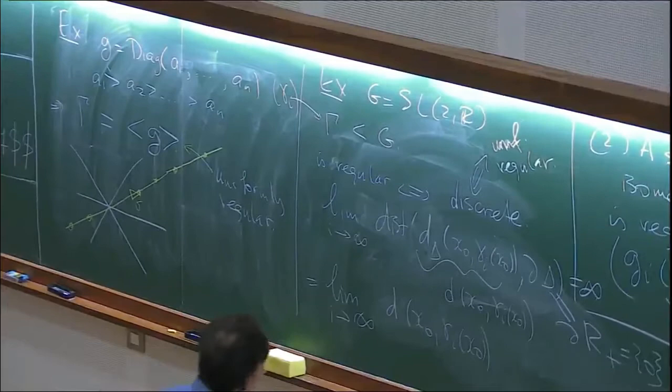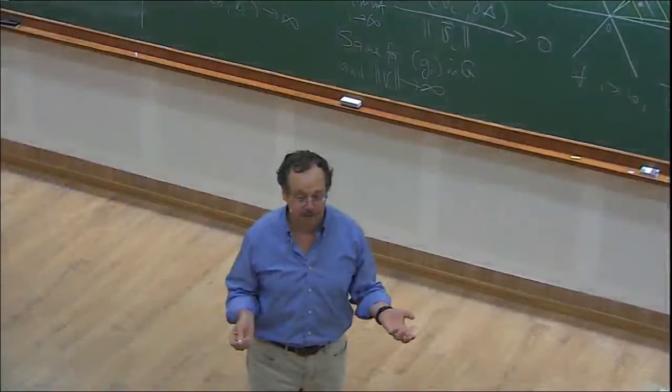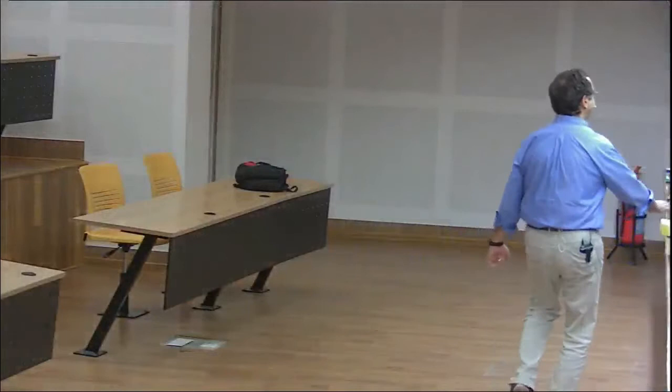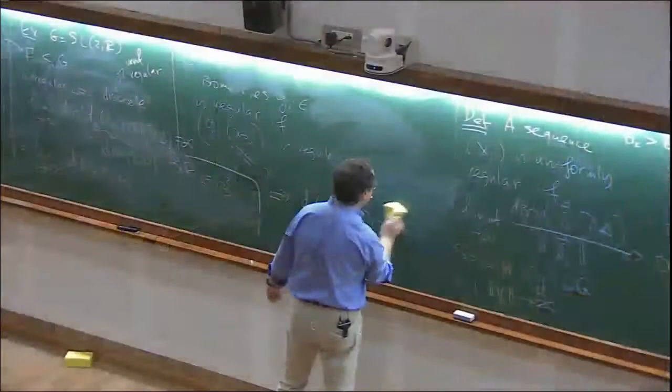Now let's continue discussing discrete groups. We understand the basic definitions. The thing to remember: regularity and uniform regularity are ways to strengthen the discreteness condition, because there are several ways to go to infinity and we're using the generic way to diverge to infinity for a sequence.